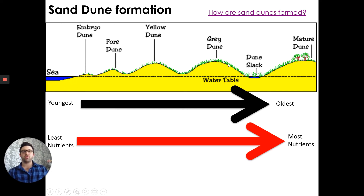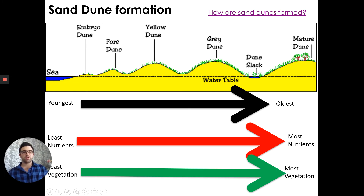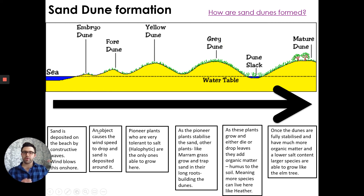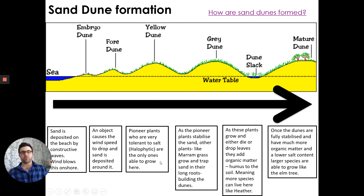We then move on to our yellow dune, which is still quite sandy but even more vegetated. Past this, we get to our grey dune, where there are more nutrients and less salt, so more plant life builds up and the surface turns grey as plants begin to form something like soil. Finally, our mature dune at the back is fully vegetated with lots of trees, heathers, and other heathland species.